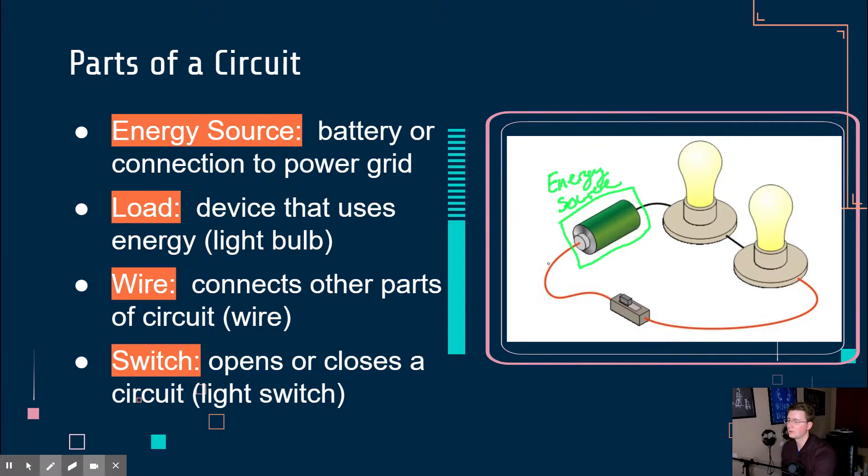The next one we're going to have is our load. So our load is a device that uses energy. Really commonly, you will see a load as a light bulb. And so that's what we're going to have in our image on the right as well. We have our two light bulbs over here. And that's going to be our load. There's something that's using the electricity. It's kind of like the electricity has to lift it. It's not actually lifting anything, but it's the idea that that energy is being used. Just like in order for you to lift something, if you're carrying a load, you have to use energy for it.